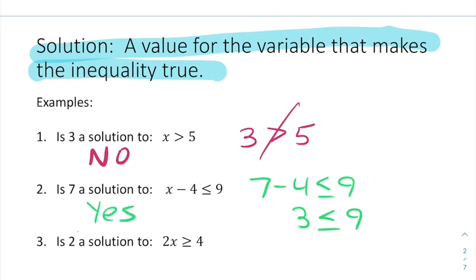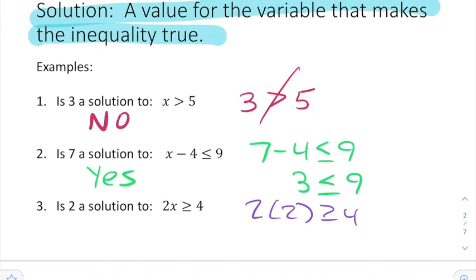Finally, we're asked, is 2 a solution to 2x is greater than or equal to 4? So I'll plug 2 in, and we have 2 times 2 is greater than or equal to 4, which if we simplify, says 4 is greater than or equal to 4. Well, 4 is not greater than 4, but 4 is equal to 4. So this is true, meaning that 2 is a solution.